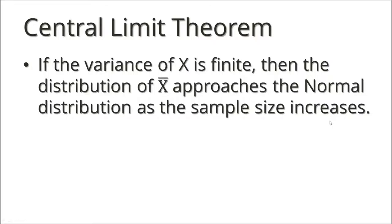How big is big enough so that we can just use the normal distribution in all cases? It depends on the distribution of x. If the distribution of x is approximately normal, then a sample size of 30, or maybe 50 if you want to play it safe, is going to be good enough to use the normal approximation. If x starts out not normal by a lot — that is, it's heavily skewed — then you may want to go with 100 or maybe up to 500 for a sample size before you can use the normal distribution.